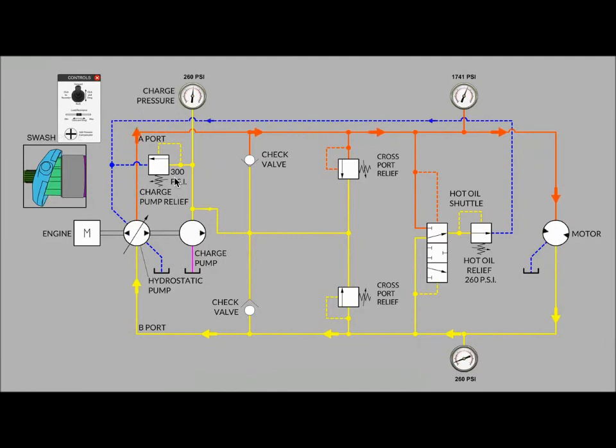Well, if the charge pump relief valve closed, that must mean there's an easier path somewhere. Indeed, there is. If we follow the charge pump flow and find out that is being used to replenish and charge the return side of the closed loop, that's normal.